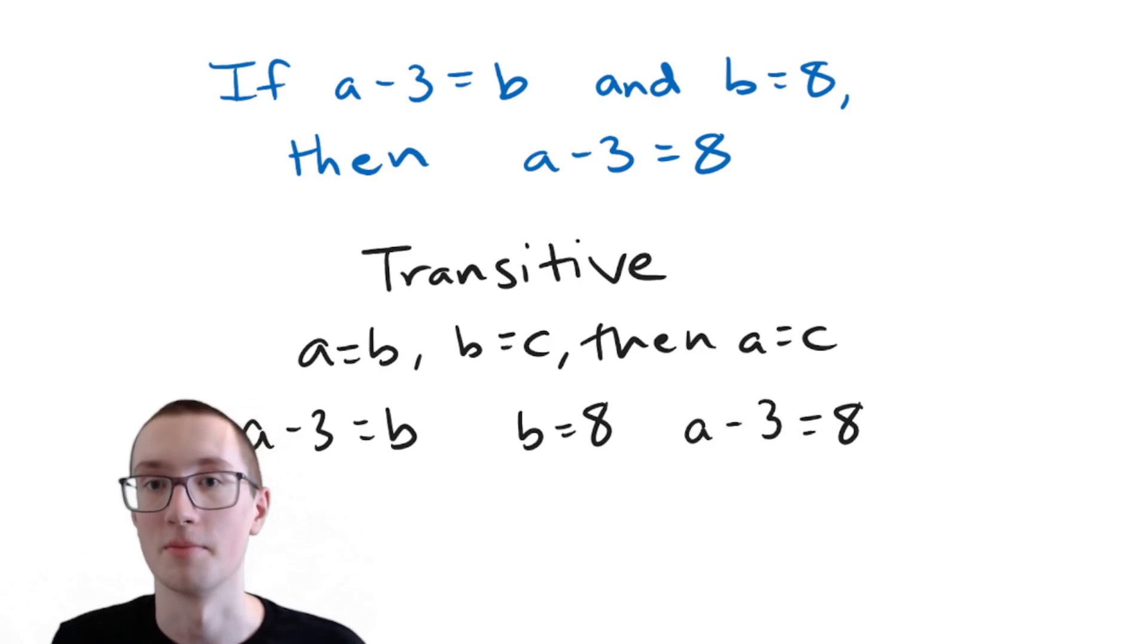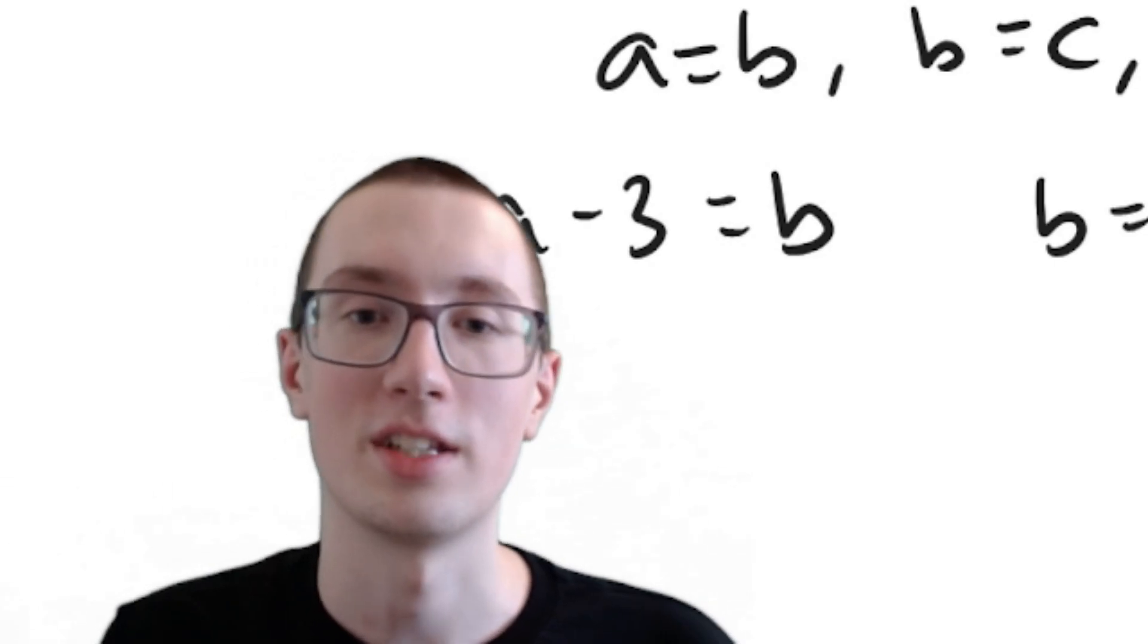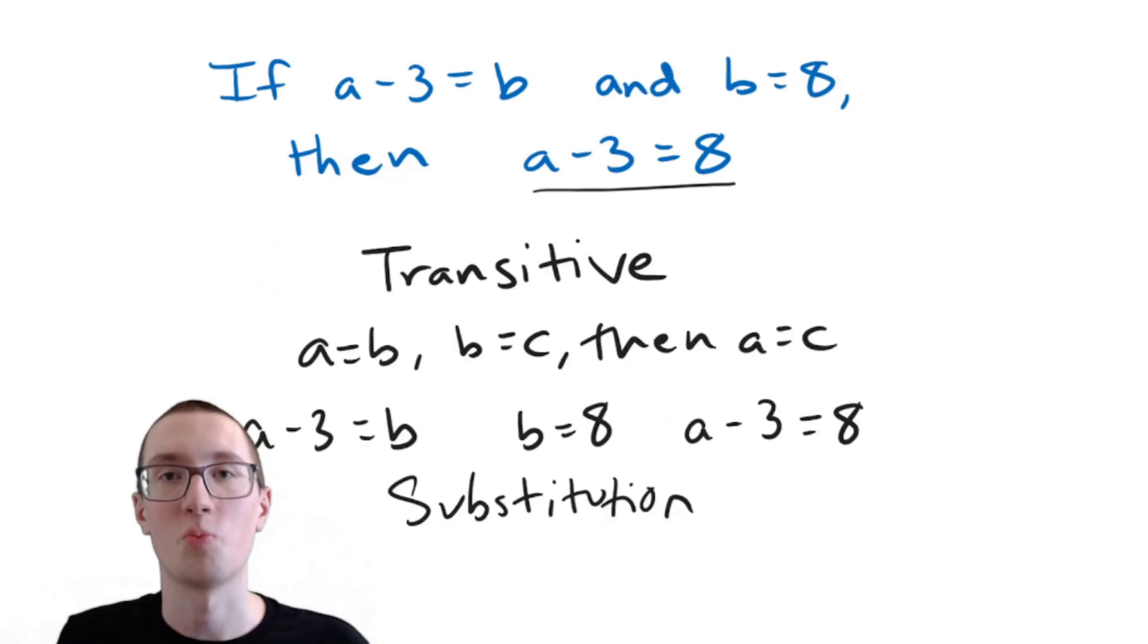So in that case, we should be able to say that A minus three equals eight, because they're the same. And that fits this problem. So therefore, it's the transitive property, except that a lot of you might have said substitution. And this is where I start having problems with textbooks. You see,